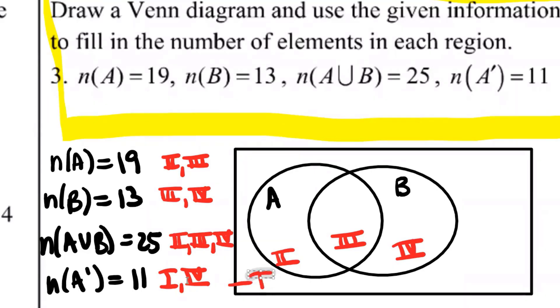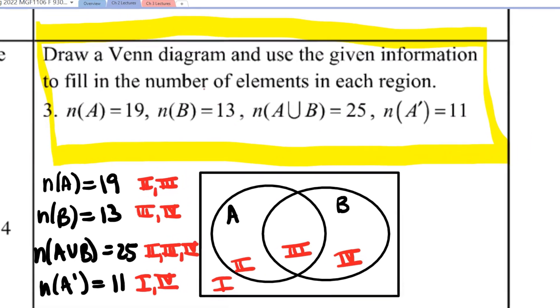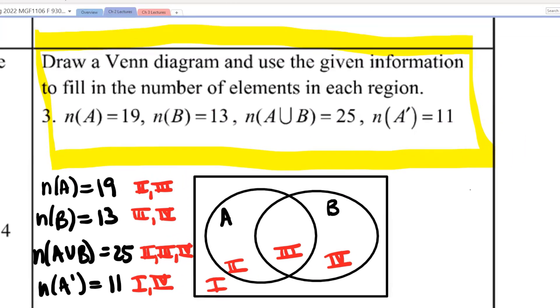The cardinal number formula says that the number of elements that are in A union B is going to be equal to the number that are in A plus the number that are in B minus the number that are in their overlap. Because when you count the number in A and the number in B, you end up counting what's in their overlap twice. So you have to subtract off the extra.